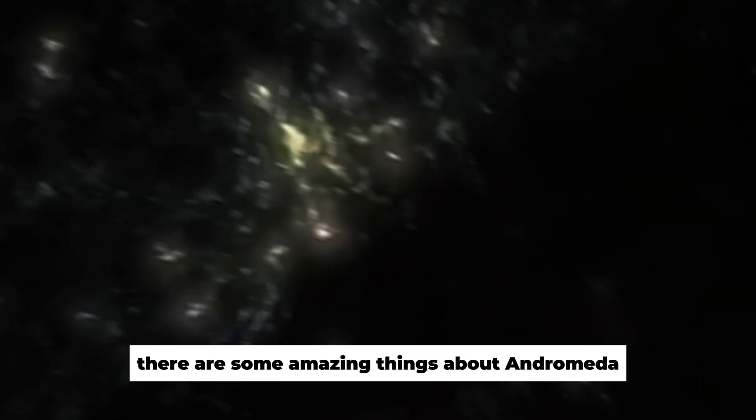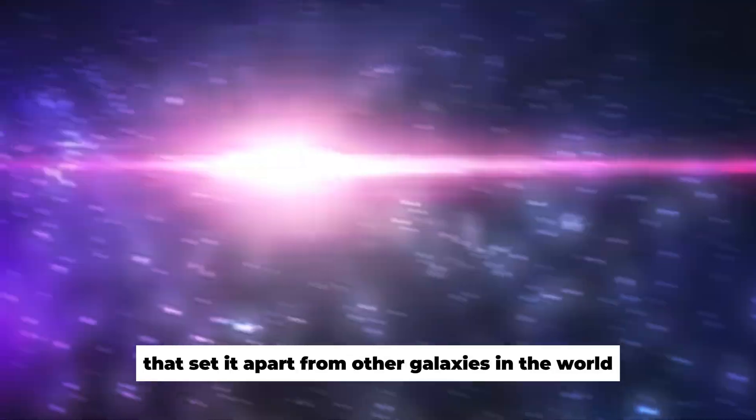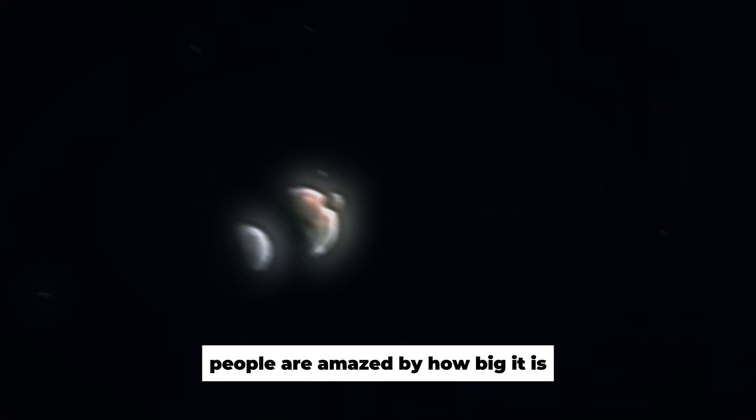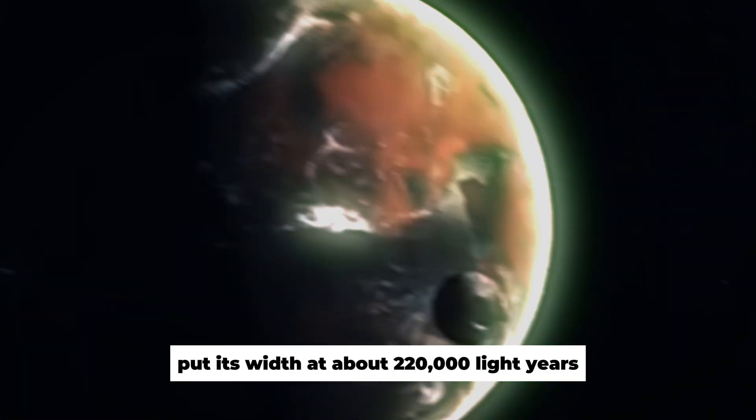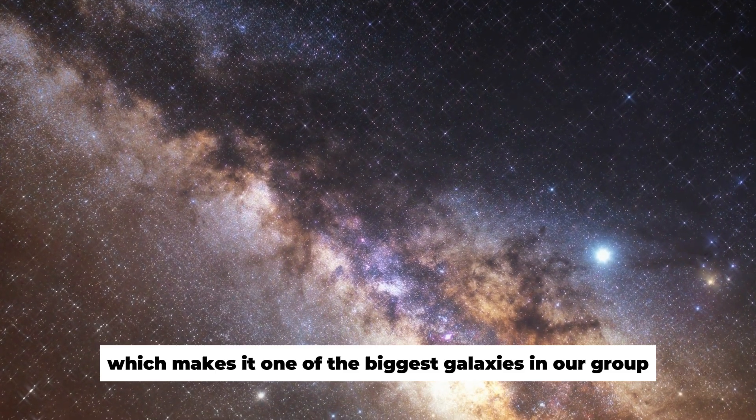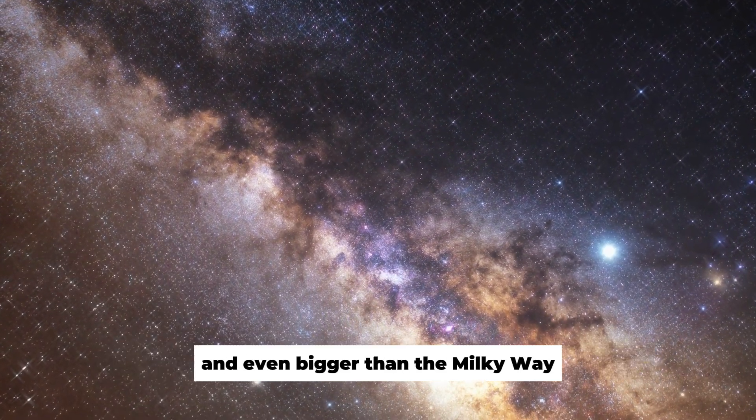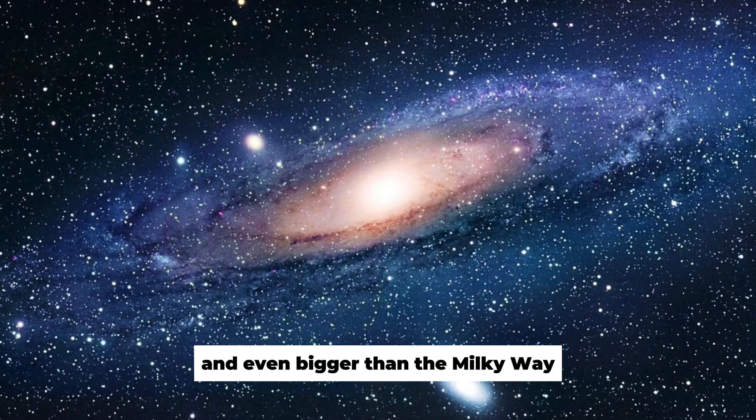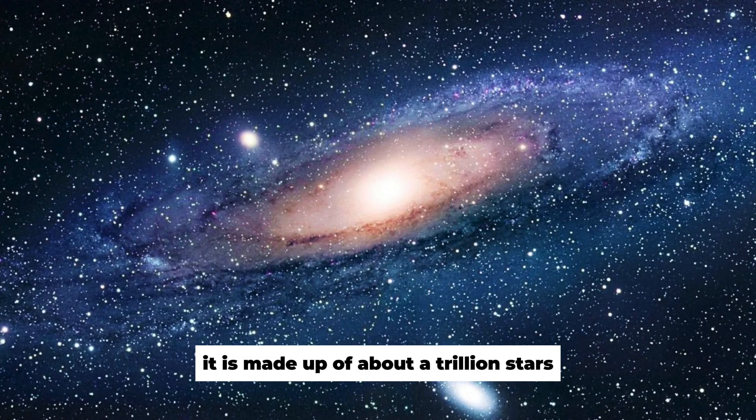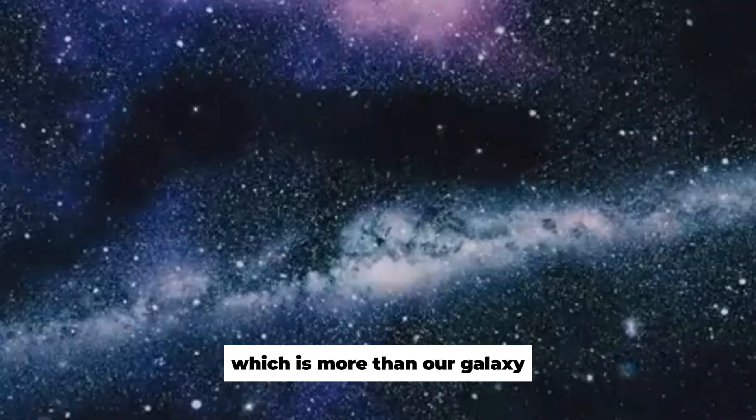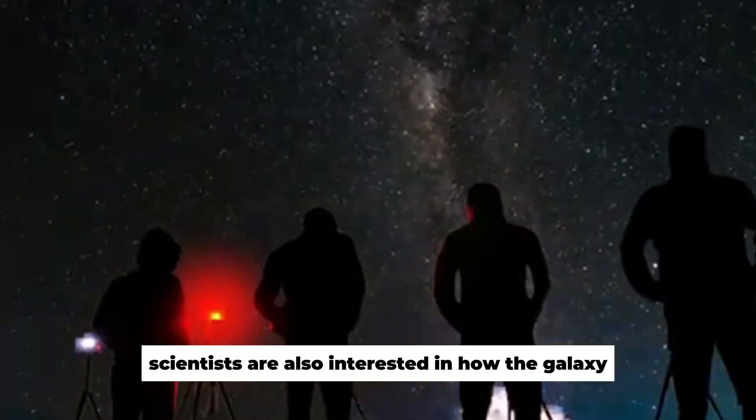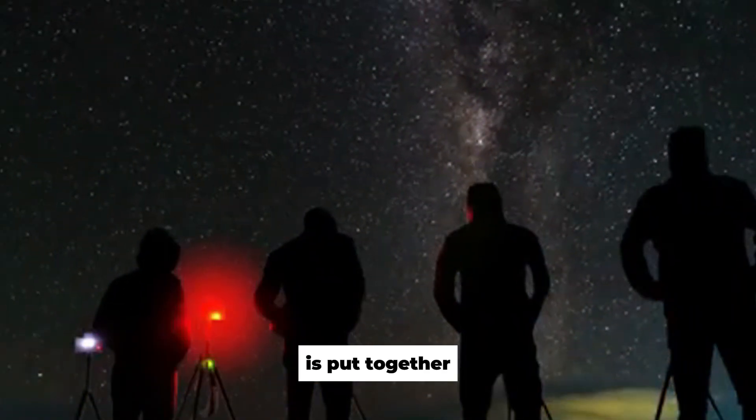There are some amazing things about Andromeda that set it apart from other galaxies in the world. People are amazed by how big it is. New estimates put its width at about 220,000 light years, which makes it one of the biggest galaxies in our group and even bigger than the Milky Way. Its mass comes from its huge size. It is made up of about a trillion stars, which is more than our galaxy.